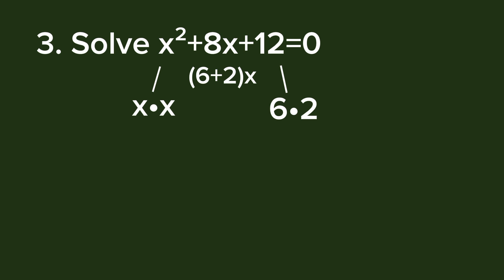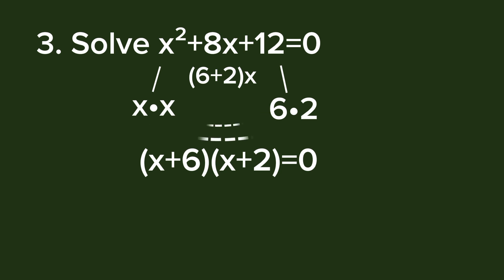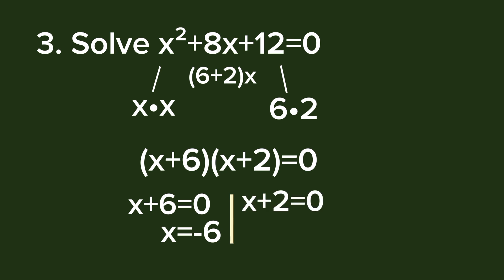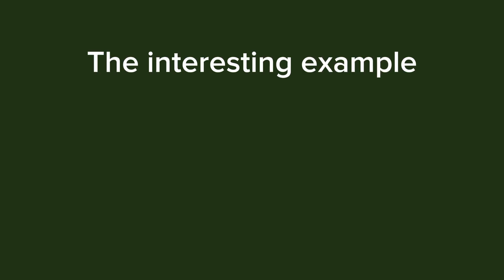The factors 6 and 2 are the addends of 8, so we pair (x + 6)(x + 2) = 0. By the zero product property: x + 6 = 0 gives x = -6, and x + 2 = 0 gives x = -2. These are the two solutions.